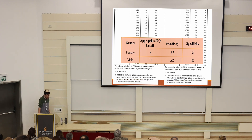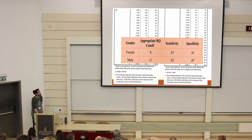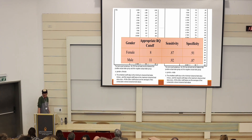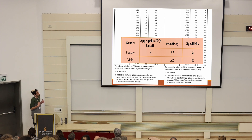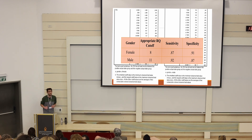The appropriate RQ cutoff for females is 8, with a sensitivity of 0.87 and specificity of 0.91. And for males, it is 11, with sensitivity of 0.83 and specificity of 0.95. This pattern was also found in the parent report questionnaire in Israel for children, so it's very interesting to find it also for adults. It means that females need fewer autistic traits to be classified in the autistic group.